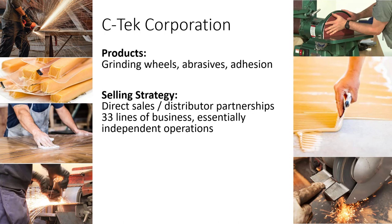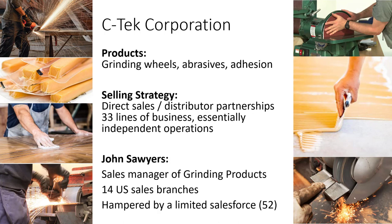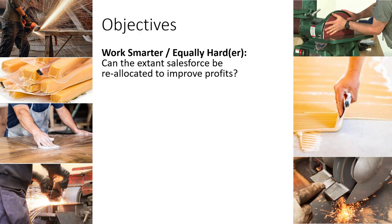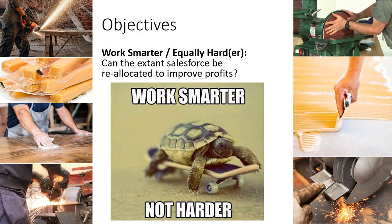Our hero in this case study is John Sawyers. He's a sales manager of the grinding products division. The grinding products division has 14 US sales branches. Right now, John Sawyers is hampered because corporate won't let him hire an additional Salesforce member, so he's trapped at using only 52 salespeople at max, distributed across these 14 different sales branches.